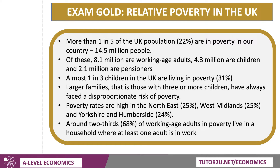Britain has one of the highest rates of child poverty of any European country. One in three children live in relatively poor households, and those with large families of three or more children face a disproportionately higher risk of poverty. There's a big regional variation — the North East, West Midlands, and Yorkshire have the highest rates. Crucially, around two thirds, just under 70%, of working-age adults in poverty live in a household where at least one person is in work. This is the concept of working poverty.